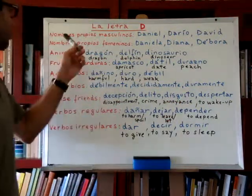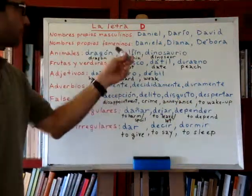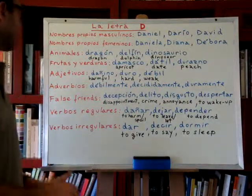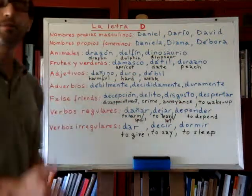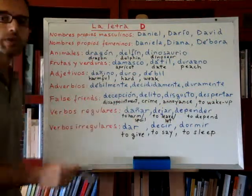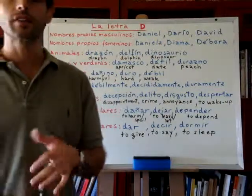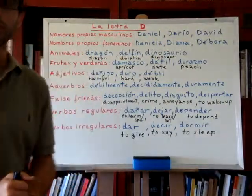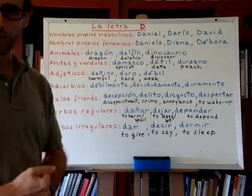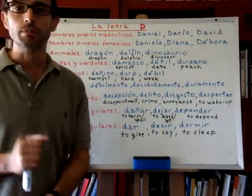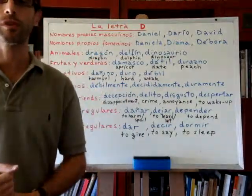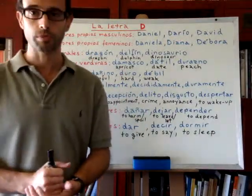We will see some masculine given names, feminine given names, names of animals, names of fruits, adjectives, adverbs that begin with D, false friends, and some regular and irregular verbs. In the next class I will show you how to conjugate those irregular verbs that we see today. I have chosen some of the most used verbs in Spanish.